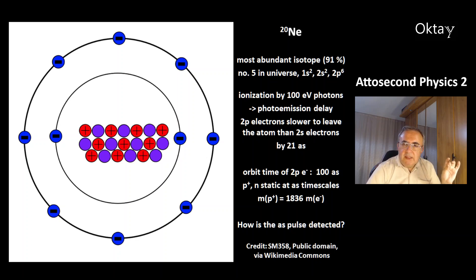The orbit time of the 2p electrons in its dumbbell-shaped orbital was measured at 100 attoseconds. At this time scale the massive proton and neutron are static. They can't move much. The mass of the proton is 1836 electron masses.